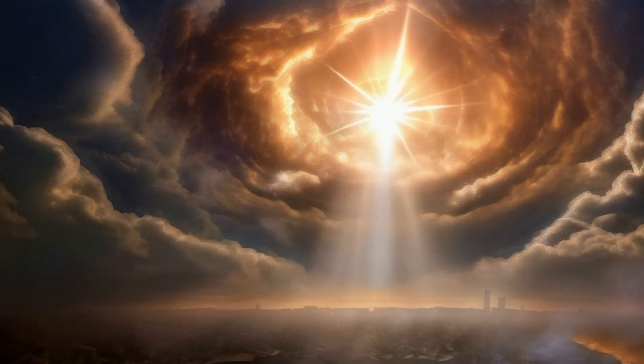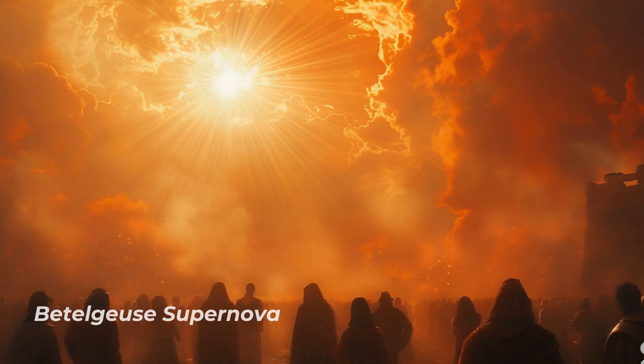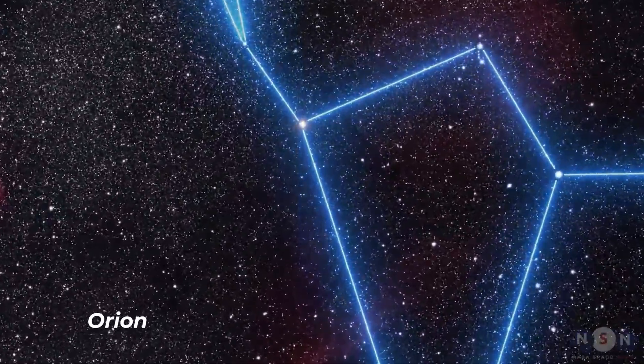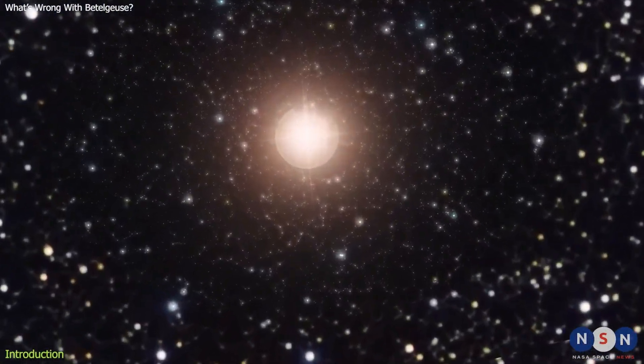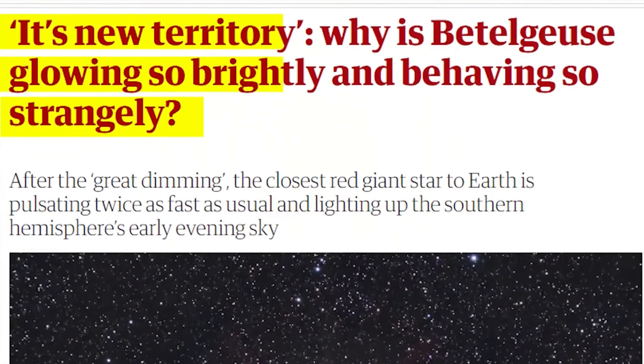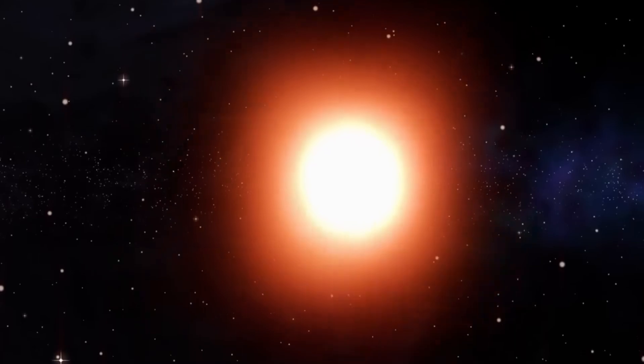One of the most anticipated astronomical events is the Betelgeuse supernova located on the famous shoulder of Orion. Betelgeuse is a red supergiant star nearing the conclusion of its life. Strangely, in 2019, Betelgeuse, one of the brightest stars in the sky, began to fade.